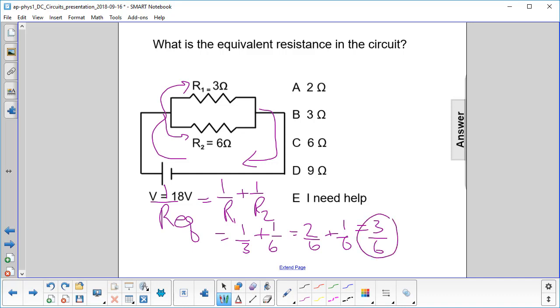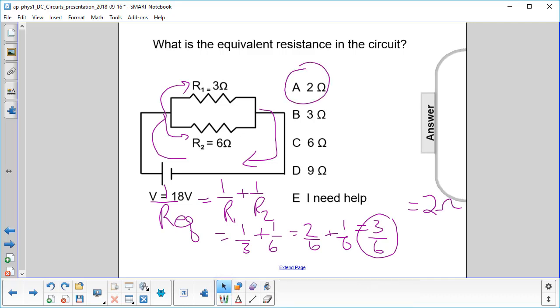So you have to flip that. You flip that and you get R equivalent will be six over three, which is two. So two ohms is our answer. Make sure you flip your answer at the end.